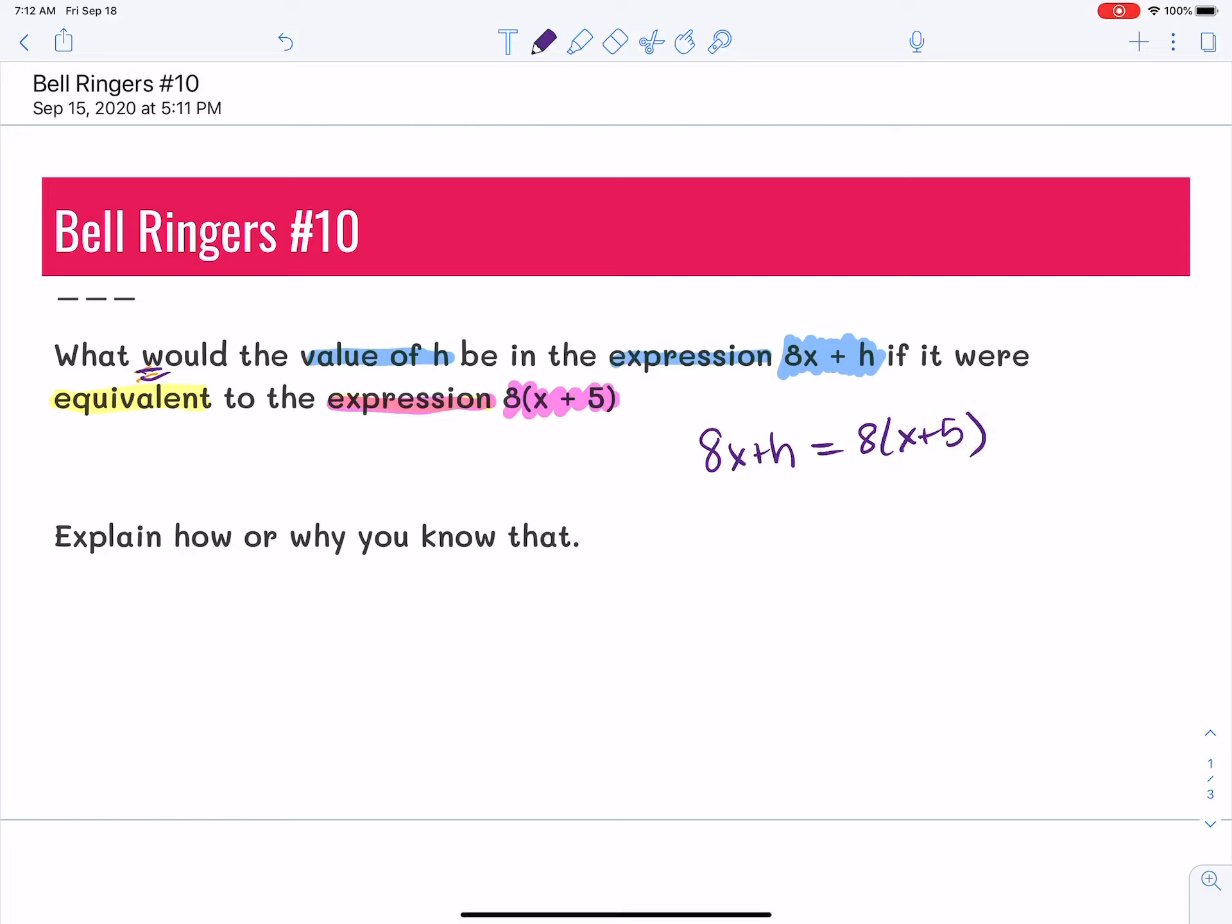Okay, what does Ms. Beacon always want you to do? They always want you to follow the order of operations. So I have to do my distributive property. So 8 times x plus 5 times 8 equals 8x plus h. 8x plus 40 equals 8x plus h.